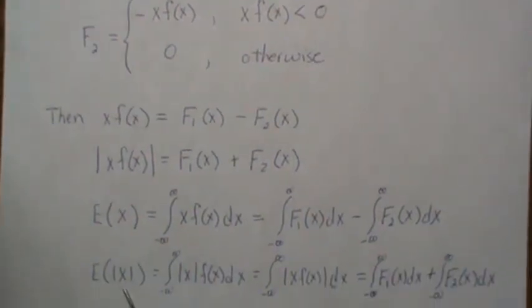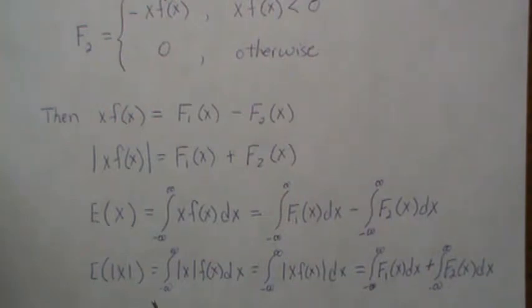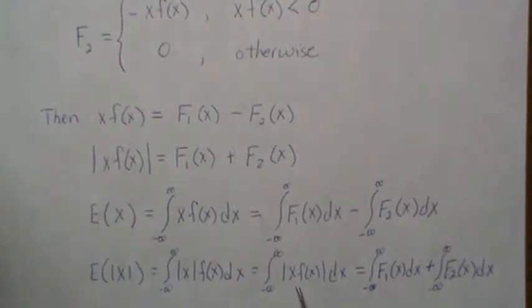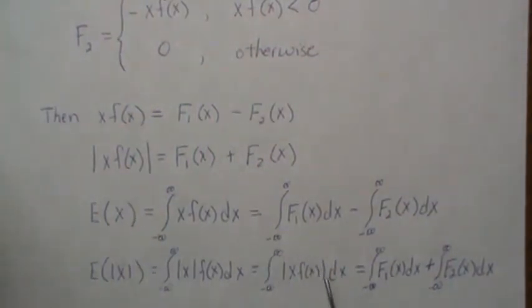If we look at the absolute value of X, that is this: you stick an absolute value of X in here and then integrate. But since f of x is always positive, you can put absolute values around the whole thing, and we showed here that it can be written as that sum. So it can be written as this, the addition of those two.